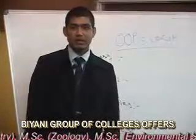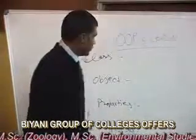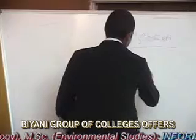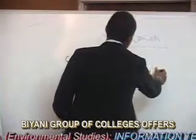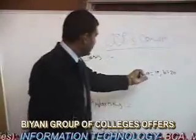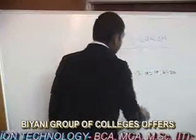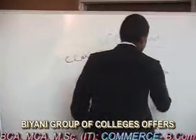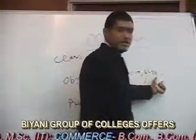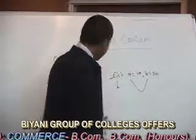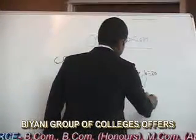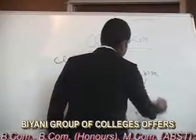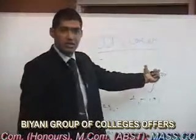Methods are operations that can be performed over an object. For example, like int a = 10, b = 20 — these are variables. Here int is a data type, we can say that it is a class. A and b are two objects, and 10 and 20 are their properties. Operations like addition, subtraction — these operations can be performed over these objects.